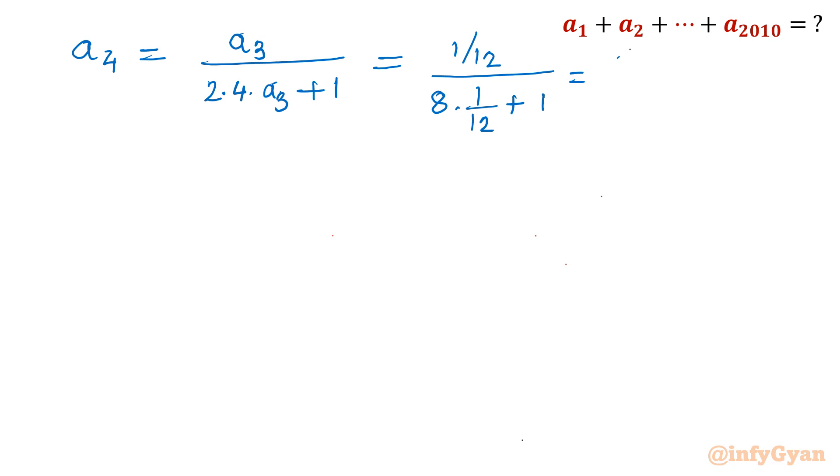So I will write like this: 1/12 divided by 8/12 plus 12/12. So this will become 1/12 divided by 20/12, which we will write as 1/(4×5). The number written here and the next successive number.